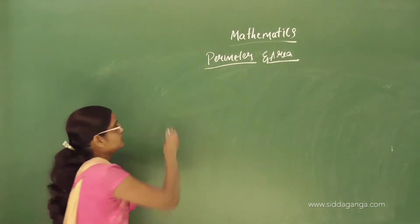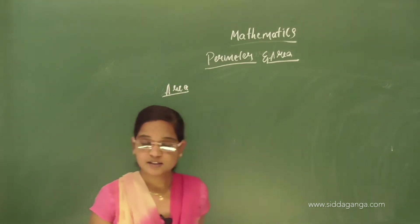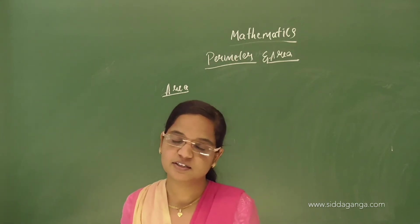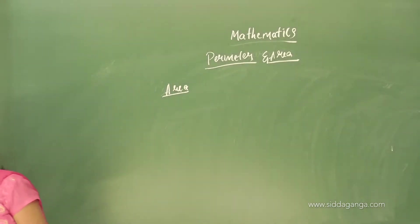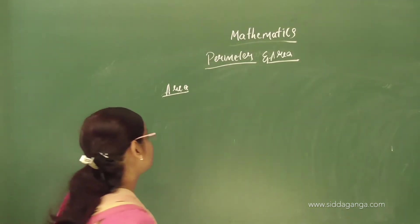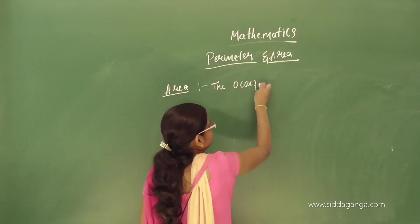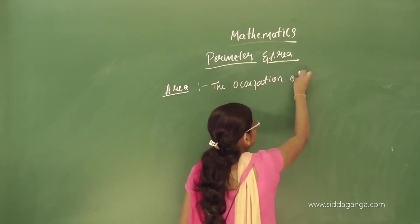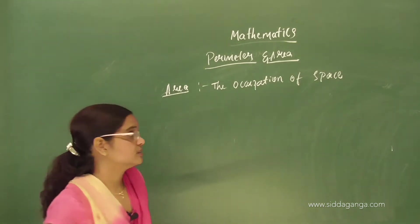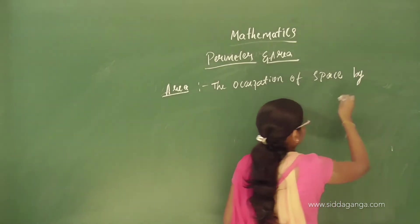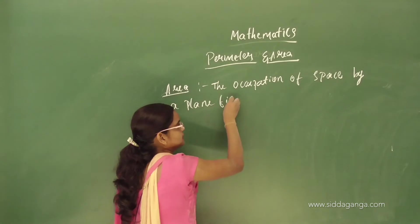What is the area meaning? Area is just occupation of space. The space occupied by a plane figure is called its area. A plane figure has an area.